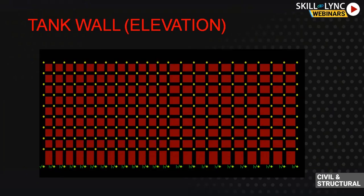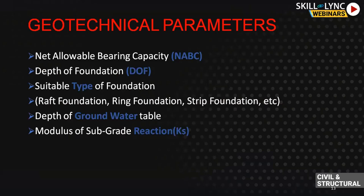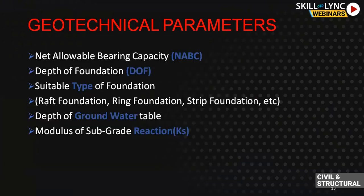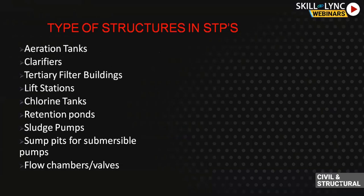An important distinction: net allowable bearing capacity has overburden and self-weight removed, while gross allowable bearing capacity includes them. When checking bearing capacity in your model, since you are already applying structure self-weight and soil weights in your load combinations, you must compare against the gross bearing capacity, not net allowable — otherwise you will be unsafe. The modulus of subgrade reaction tells you how the soil will deform under load and is obtained from geotechnical reports; the value is 120 for raft foundations and 90 for isolated footings.